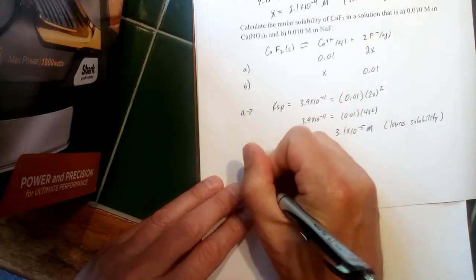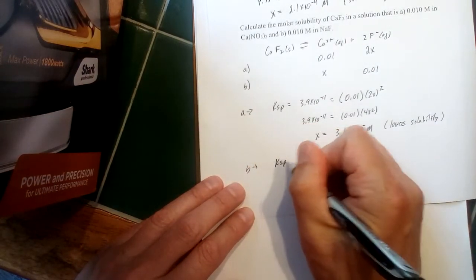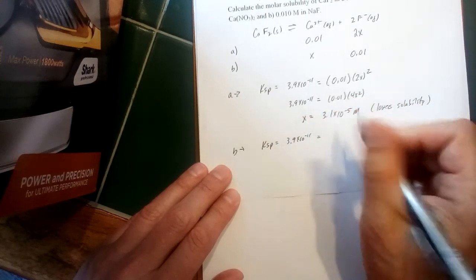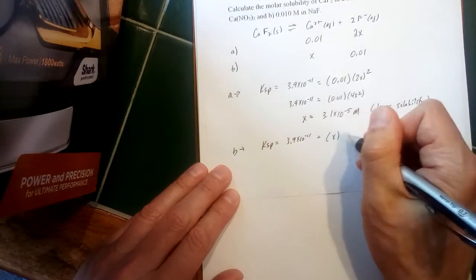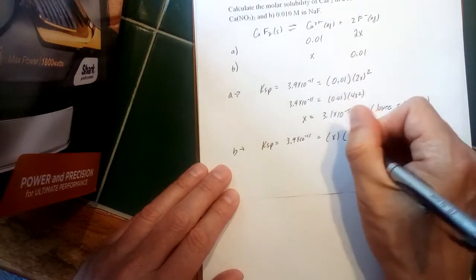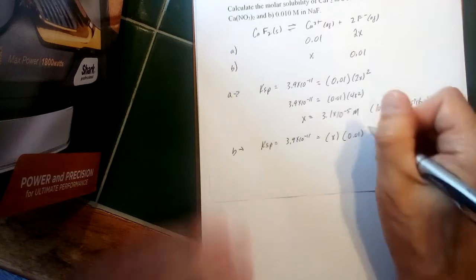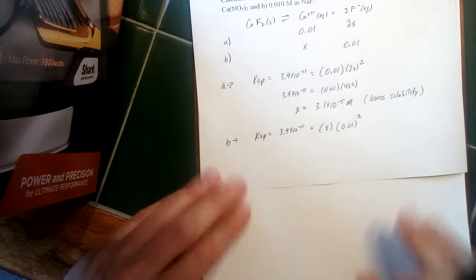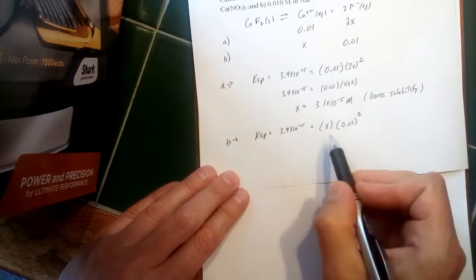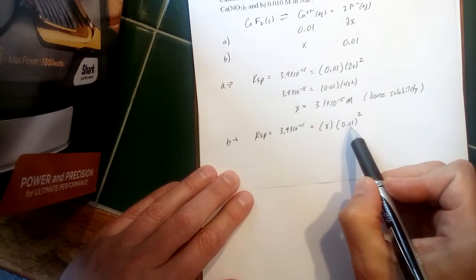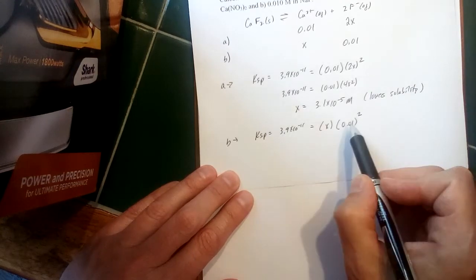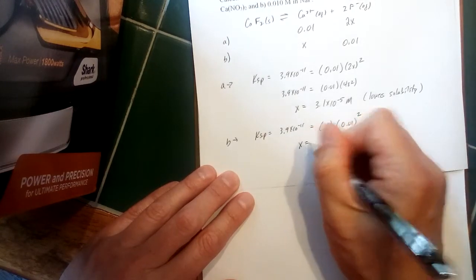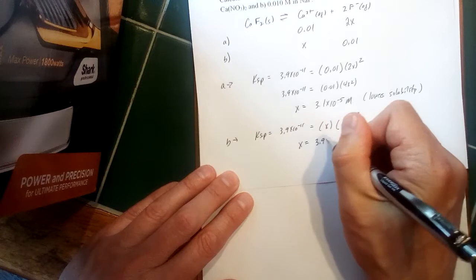Now Part B is similar here as well. Ksp is still 3.9 times 10 to the minus 11, but in this case we've got x for our calcium concentration and we'll plug in 0.01 for our fluoride concentration. Now we do still have to square that because of the two back in the balanced equation for that reaction. So solve for x here—we're just going to divide. We could square that out and then divide, or you could just divide twice by 0.01 and solve for x. So that would mean x is equal to 3.9 times 10 to the minus seventh molar.